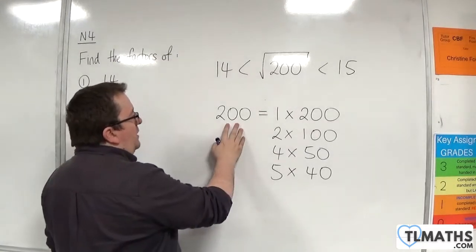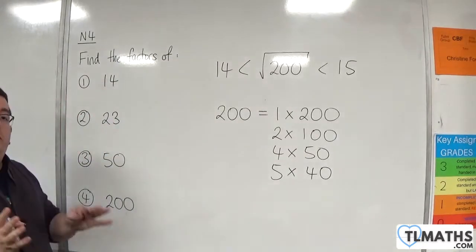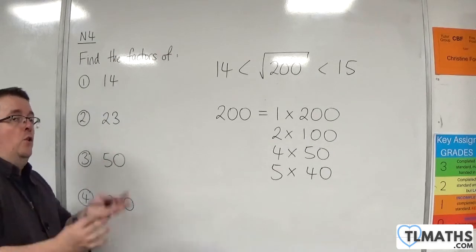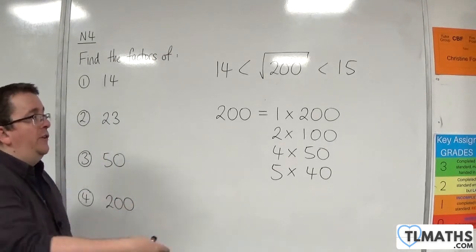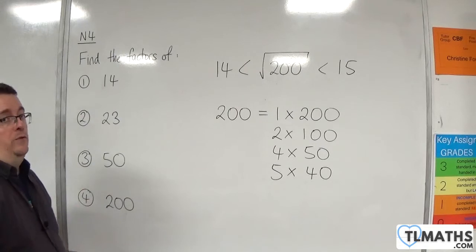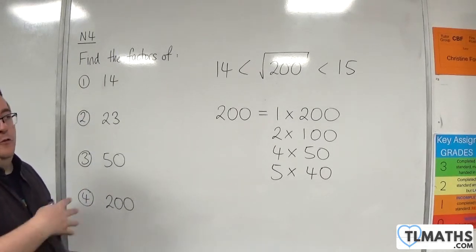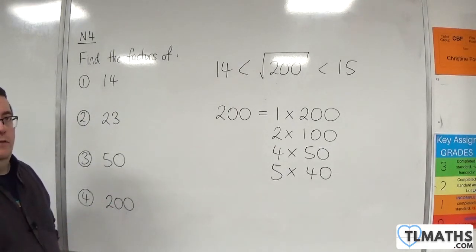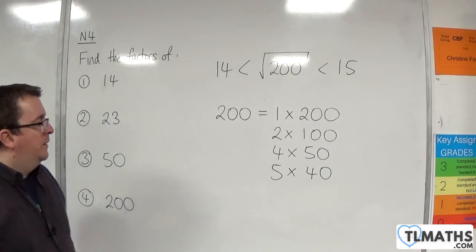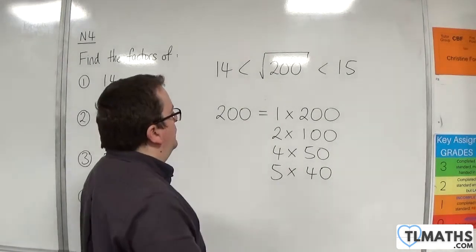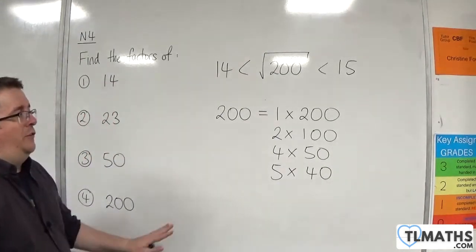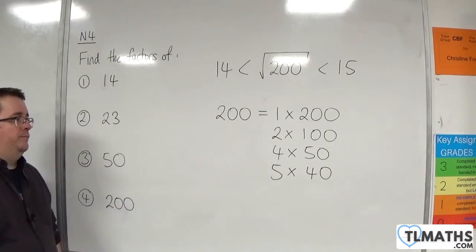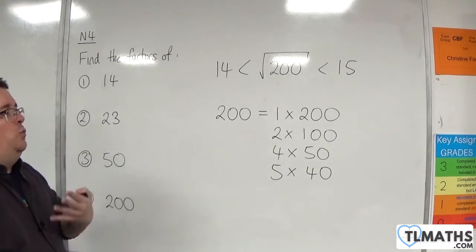Now, 6 is not going to go into 200, because one of its factors, 3, already failed. If 3 doesn't go into 200, then 6 won't either. And that goes for any multiple of 3 from here on out. So, 6 is a no-go. 7, that doesn't go into 200 either.